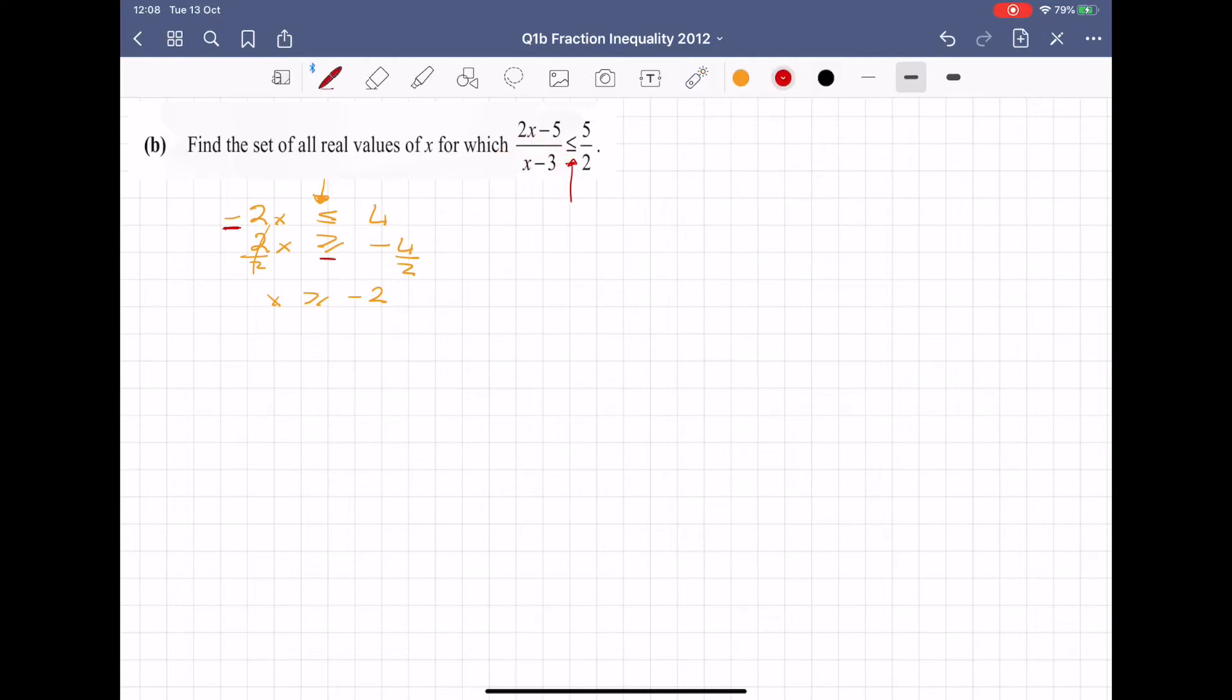So on the left hand side, instead of taking a common denominator of (x - 3) by 2, like you would in any other fractional equation, we take 1 of (x - 3) squared.